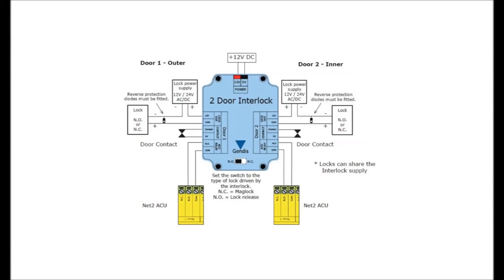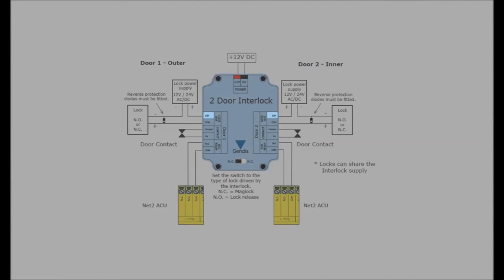Taking a closer look at the interlock again, we can see how the device is laid out. On both door 1 and door 2, it is worth noting that the 12V label refers to the connection of 12V or 24V from the lock, rather than there actually being 12V present at that location.